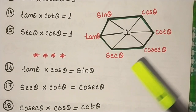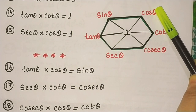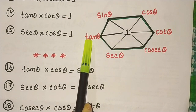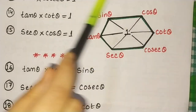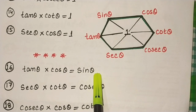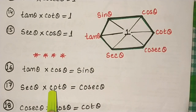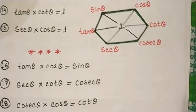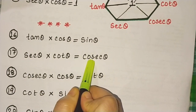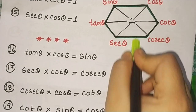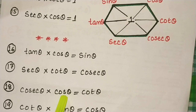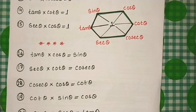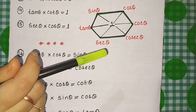The next set of formulae is very interesting. The product of the first function and the third function gives the middle one. So: tan θ × cos θ = sin θ. After that, sec θ × sin θ = tan θ. And cosec θ × cos θ = cot θ. In this way the product of adjacent alternating functions equals the middle function.